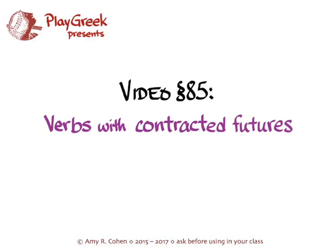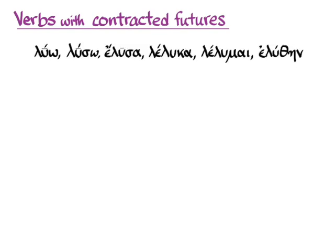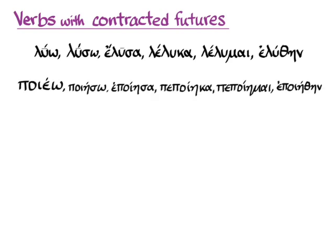This video goes with section 85 of Hanson and Quinn's Greek Intensive Course and it tells you about verbs with contracted futures. You can find this lesson in Hanson and Quinn on page 268. Verbs with contracted futures are verbs that have a slightly unusual second principal part. You've gotten used to the fairly regular principal parts of luo-type verbs and you've recently learned how to handle verbs with first principal parts that require contractions, like epsilon contract verbs like poieo.